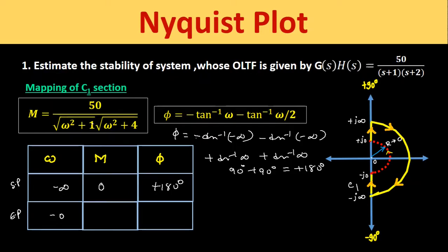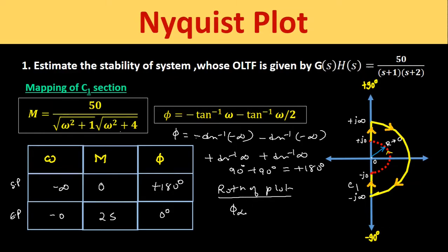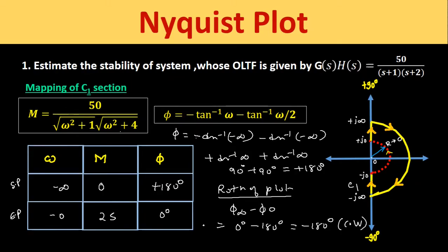At ω = 0, magnitude = 50/2 = 25. The phase angle = −tan⁻¹(0) − tan⁻¹(0) = 0°. The rotation of the plot is given by φ∞ − φ₀ = 0° − 180° = −180°. Since this value is negative, the rotation of the plot will be in the clockwise direction.